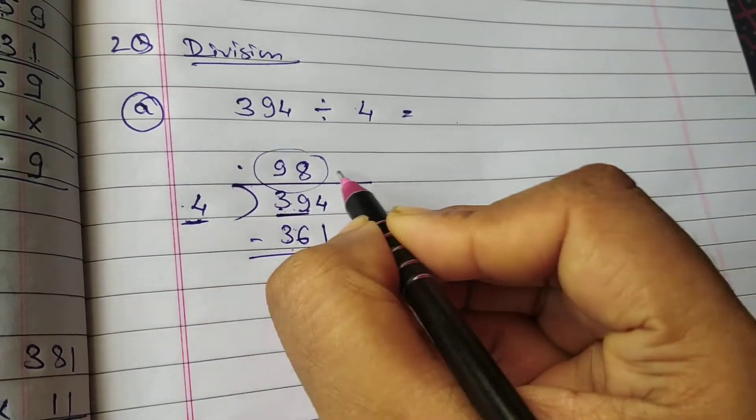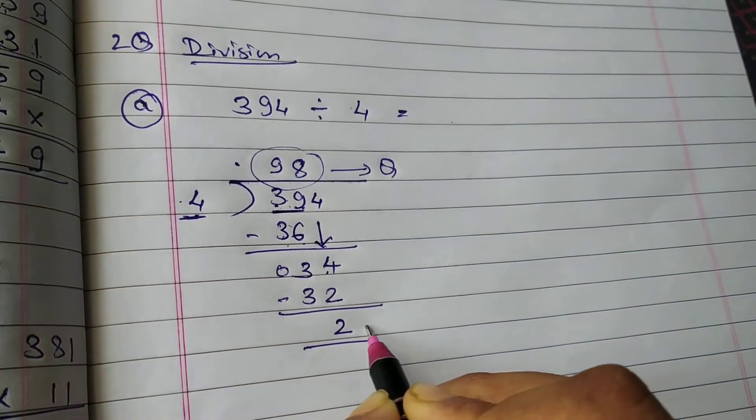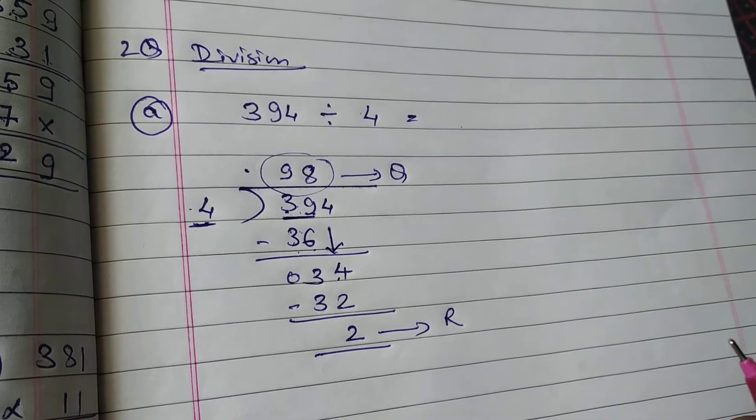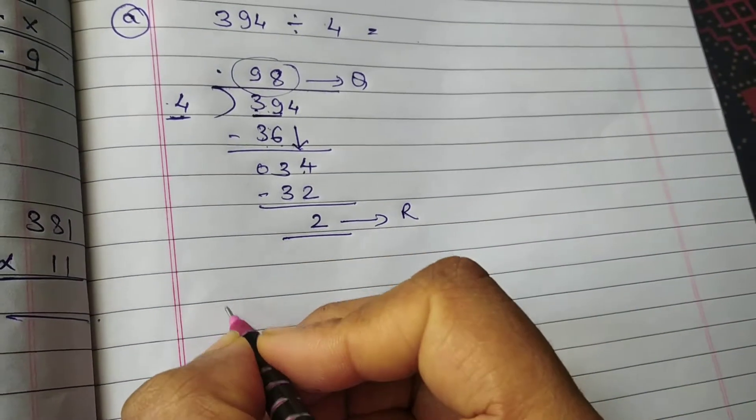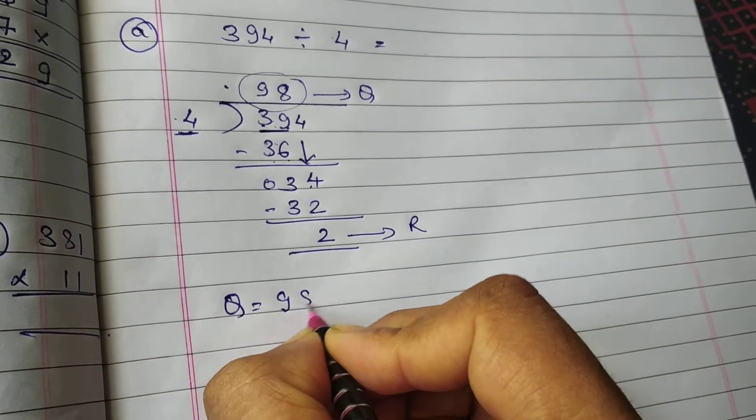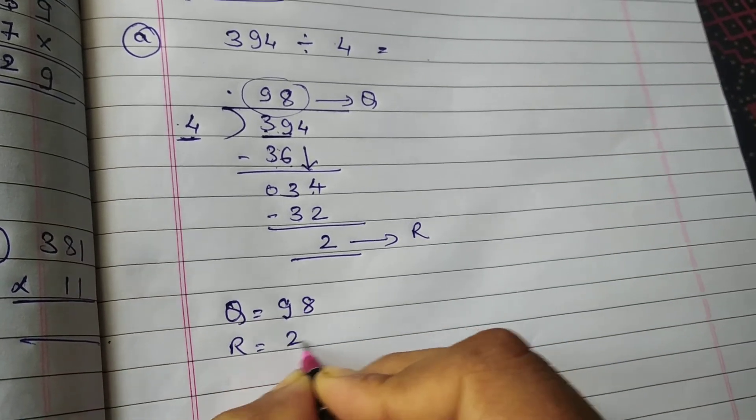This is called as quotient. This is called as remainder. So is way mein jo bhi quotient hoga na, last mein aap kaha likho ke quotient is equals to 98, remainder equals to 2.